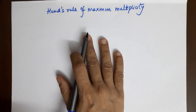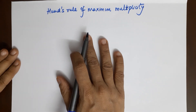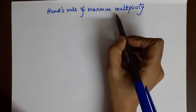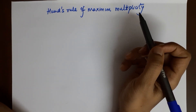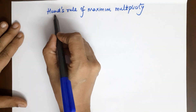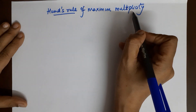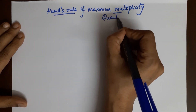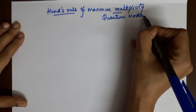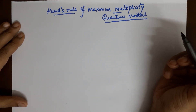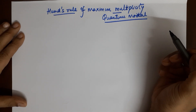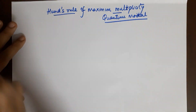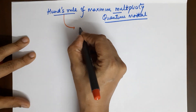Good morning students, welcome to the chemistry class with Seema Makhijani. Today's topic is Hund's Rule of Maximum Multiplicity. This topic is for class 11th but carries over to class 12th and senior classes also. This rule comes during the quantum model of the atom — only after you are done with the quantum model does this rule come into picture. The function of this rule is it helps in filling electrons in a subshell.